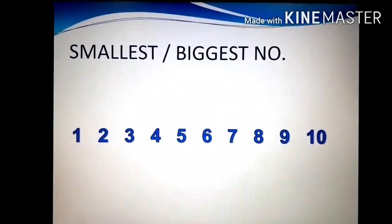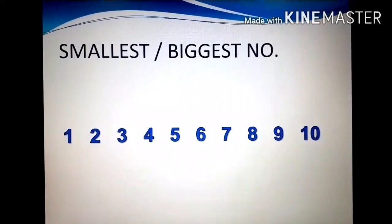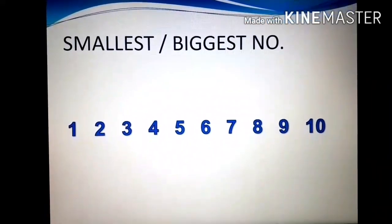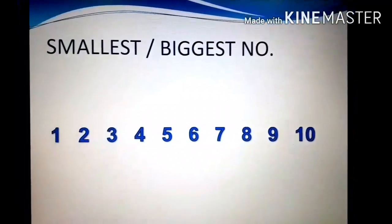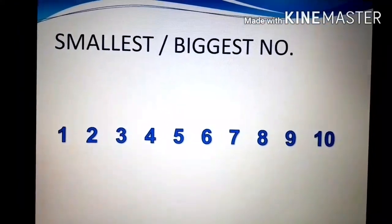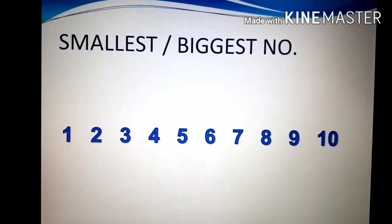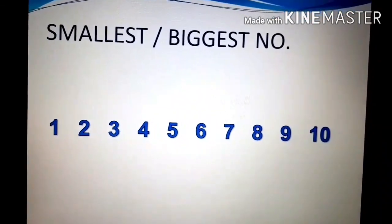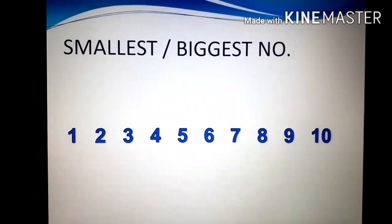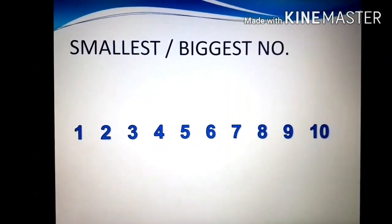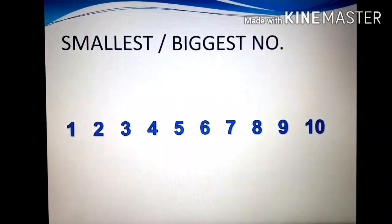Now see here, biggest number also: 2 is bigger than 1, 3 is bigger than 2, 4 is bigger than 3, 5 is bigger than 4, 6 is bigger than 5, 7 is bigger than 6, 8 is bigger than 7, 9 is bigger than 8, and 10 is bigger than 9. So in this way we can find out which is the smallest number and biggest number.